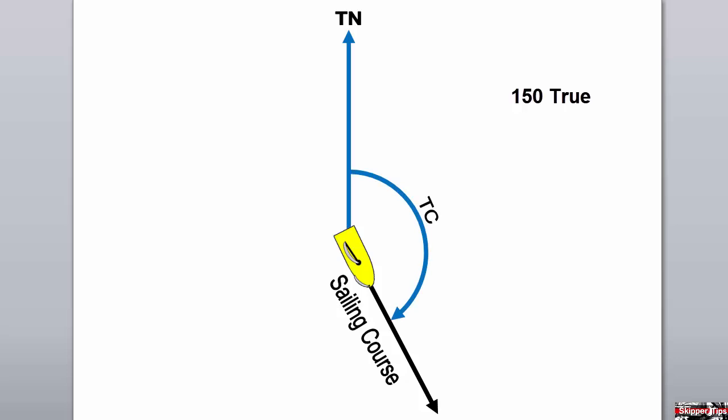You can see this makes an approximate angle of 150 degrees true, which will be our true sailing course. Now let's find the compass course to steer.